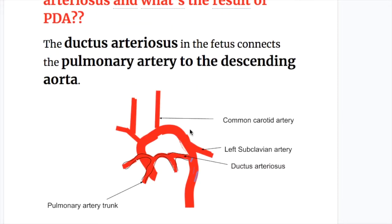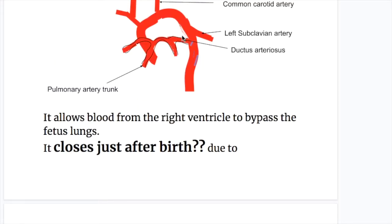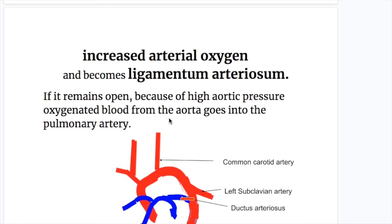The ductus arteriosus in the fetus connects the pulmonary artery to the descending aorta. It allows blood from the right ventricle to bypass the lungs — so instead of going to the lungs, the blood goes straight from the pulmonary trunk to the aorta through the ductus arteriosus. The ductus arteriosus closes just after birth due to increased arterial oxygen, and it becomes the ligamentum arteriosum.